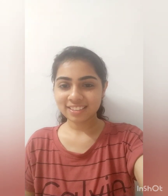Now it's time to enjoy learning a new topic — it is symmetry. So now I'll tell you what is symmetry. Let's begin. Symmetry is when two parts of a shape are exactly like one another. Now observe the figures above to see both the sides of the dotted line. If these shapes are cut or folded along this dotted line, you will find that one side is exactly the same as the other. The dotted line or the fold is called the line of symmetry.